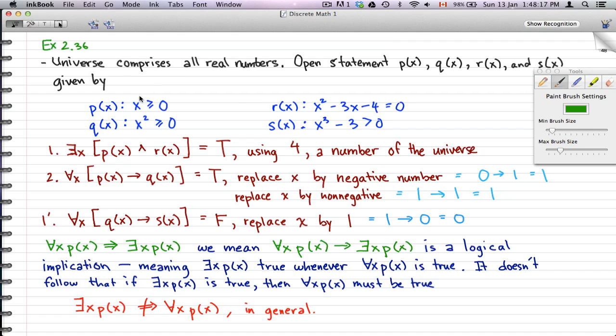For example, if we got a negative number, x by a negative number, then Px would be 0. But if we have a negative number for Qx, then the square of any negative number is a positive number. So, that is a 1. 0 implies 1 is 1. That is true. And if you do the same thing with a non-negative number, that is also true.